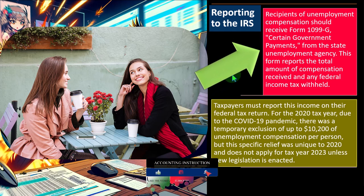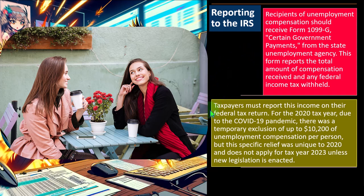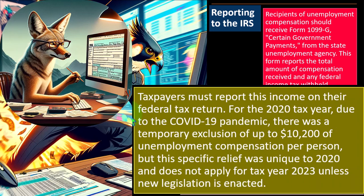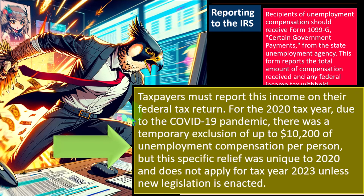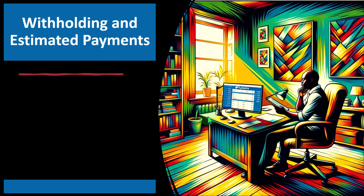Taxpayers must report this income on their federal tax return. For the 2020 tax year, due to COVID-19, there was a temporary exclusion of up to $10,200 of unemployment compensation per person. But this specific relief was unique to 2020 and does not apply for tax year 2023 unless new legislation is enacted. We're back to normal — you would have to include unemployment in income.